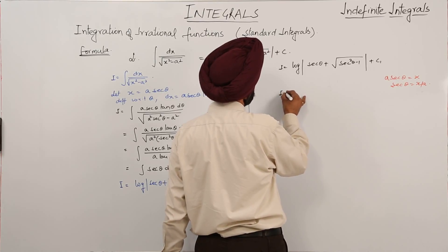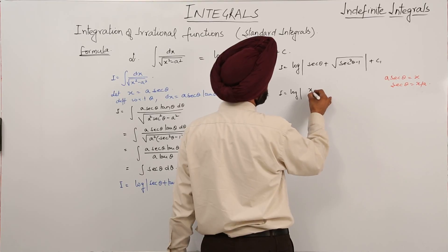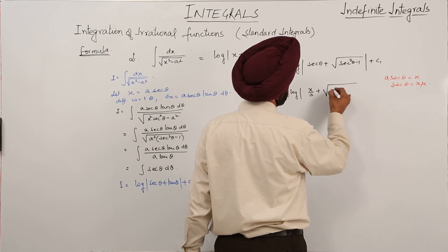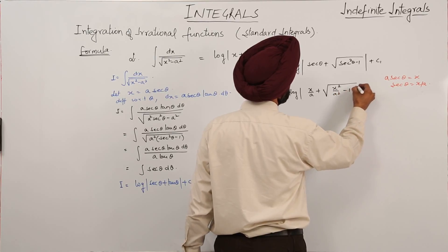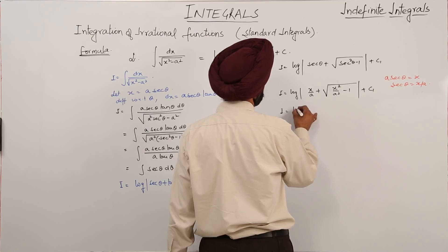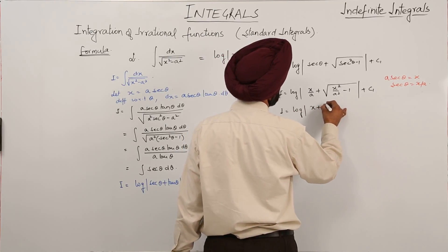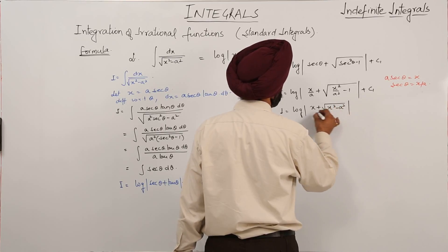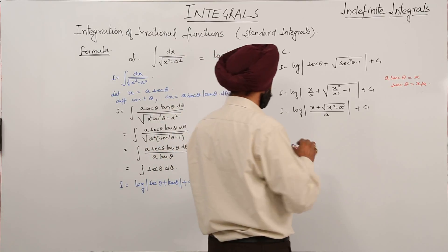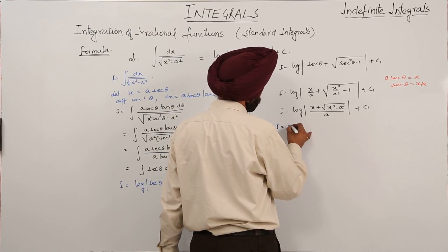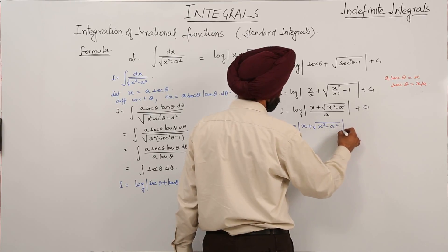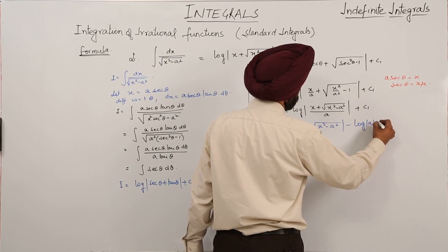Now substituting back, we have log|x/a + √(x²/a² - 1)| + c1. This becomes log|(x + √(x² - a²))/a| + c1. Using the rules of logarithm, we can write this as log|x + √(x² - a²)| minus log|a| plus c1.